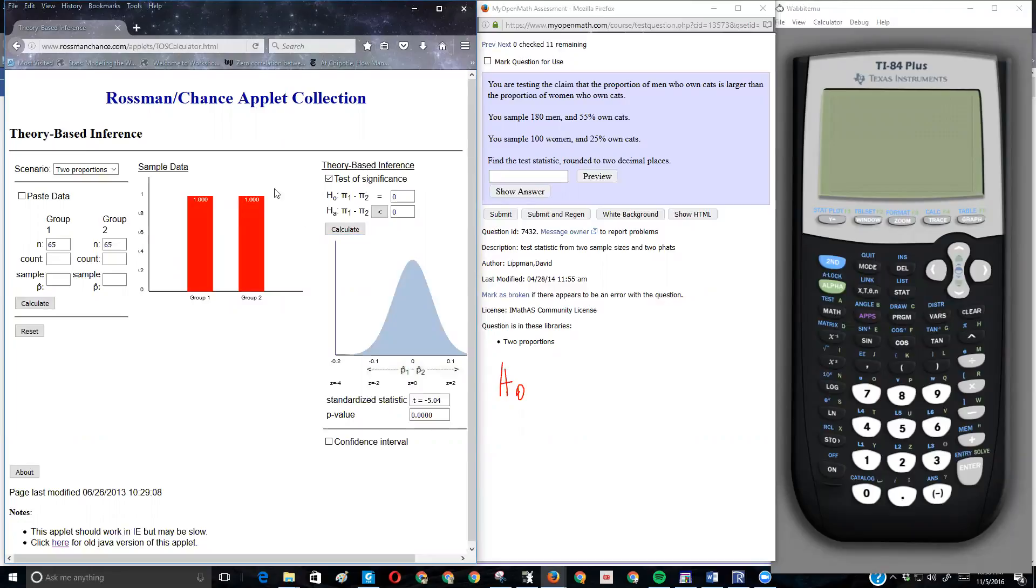The book that Rossman uses, uses pi instead of P, because he thinks P's are P values. Just know that this is P, the population proportion. What we're trying to say is, well, the claim is that the proportion of men who own cats is higher than the proportion of women who own cats. So the null hypothesis would be there's no difference, right? That, in this case, would be equal to zero.